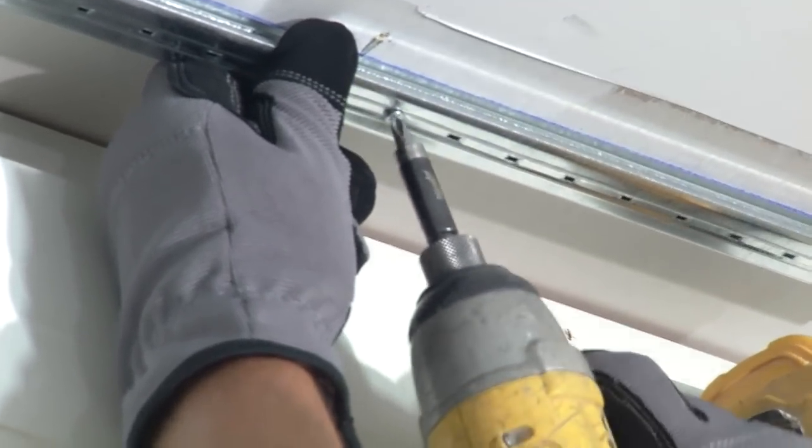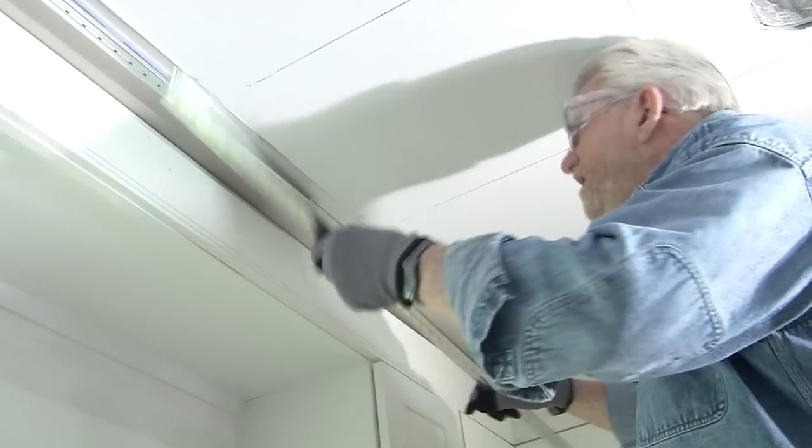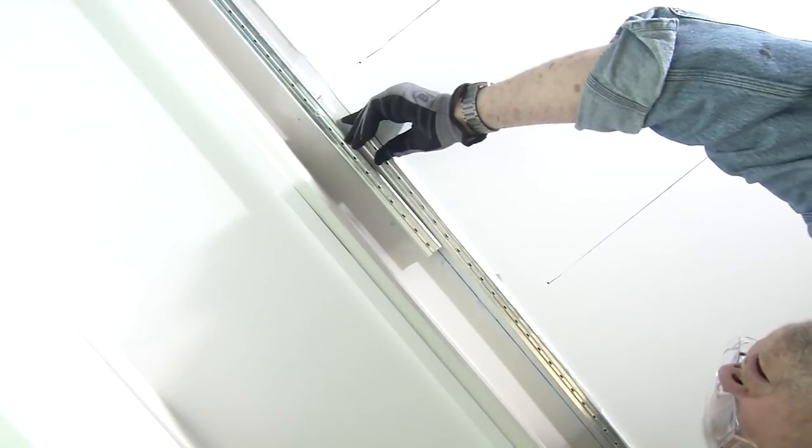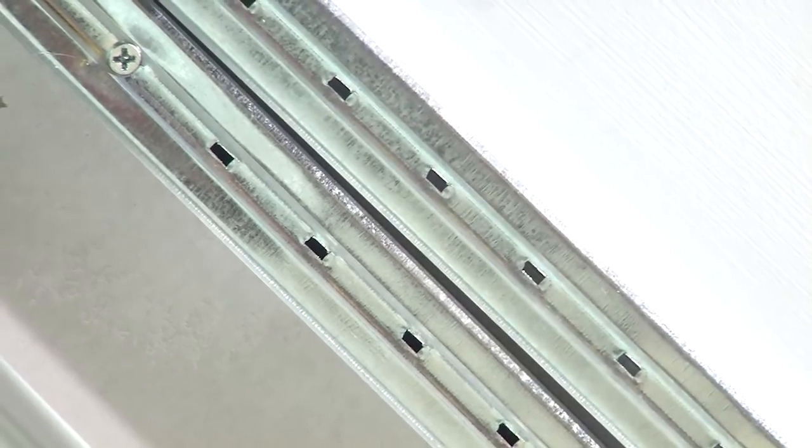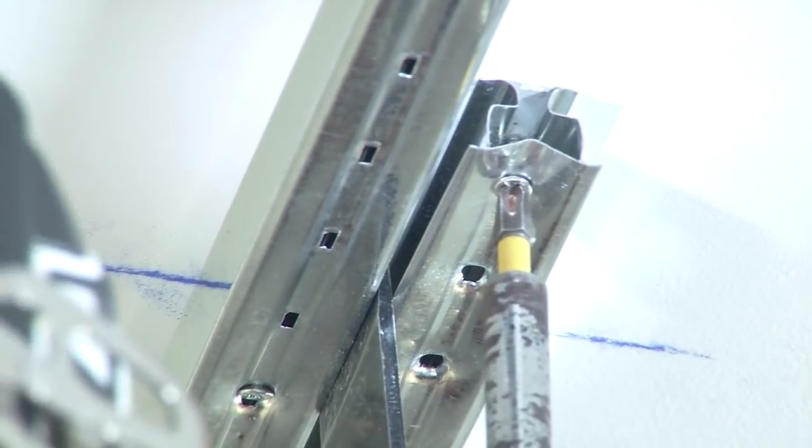Now, I found it faster and easier to overlap the sections of track, rather than measure and cut them. An eighth-inch gap should be left between the overlap tracks to provide space for the mounting clips.